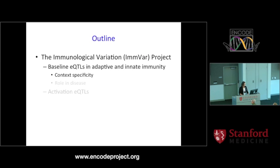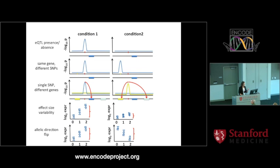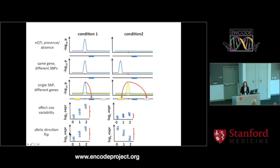Let's talk about context specificity. In eQTLs, there are several ways context specificity can manifest. Consider two conditions — two different cell types, different populations, males and females, activated or not activated. An eQTL could be present in one condition and absent in the other. You could have a single gene with an eQTL in both conditions but associated with different SNPs. A SNP could associate with one gene in one condition but a different gene in another. You can have changes in effect size, or even cases where the allelic direction flips — the high-expressing allele in one condition becomes the low-expressing allele in the other.